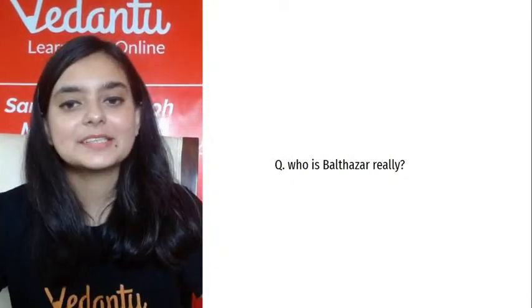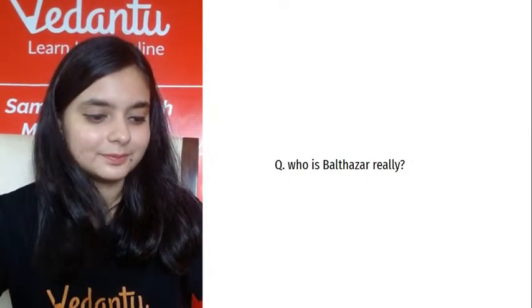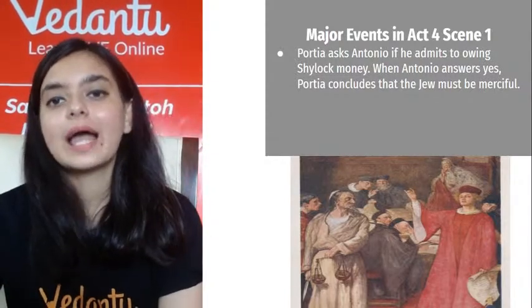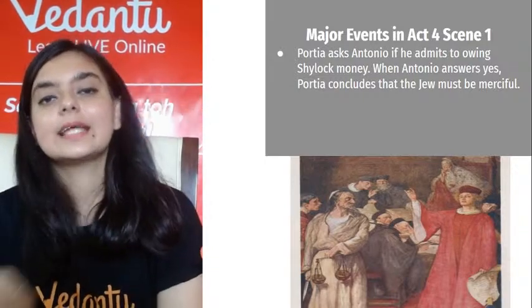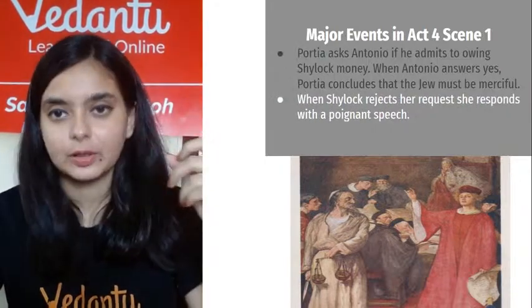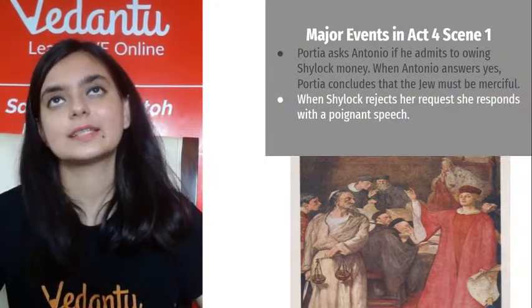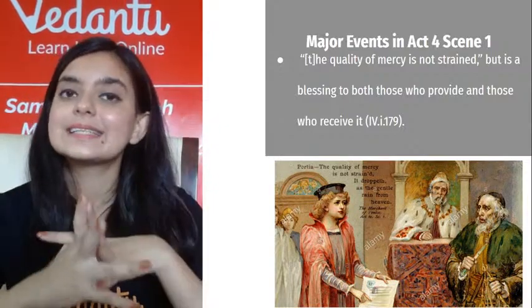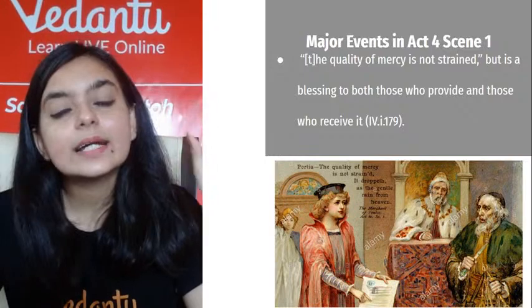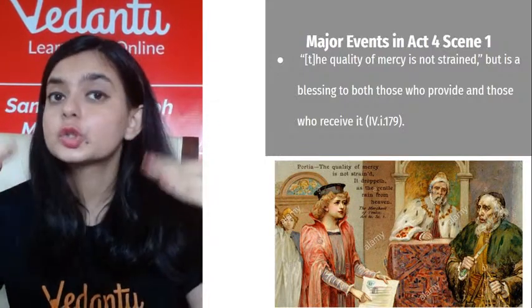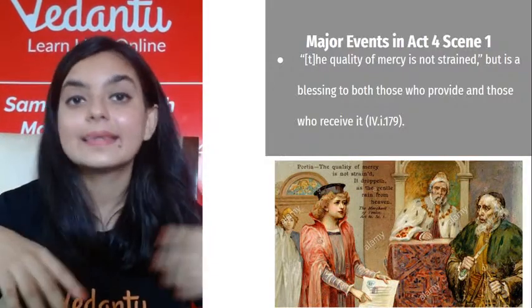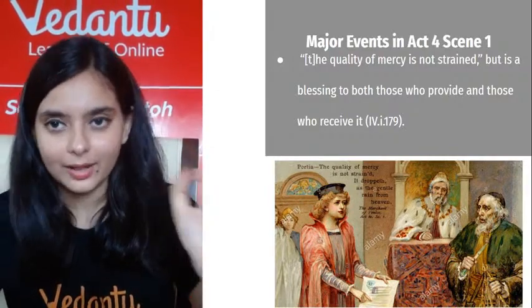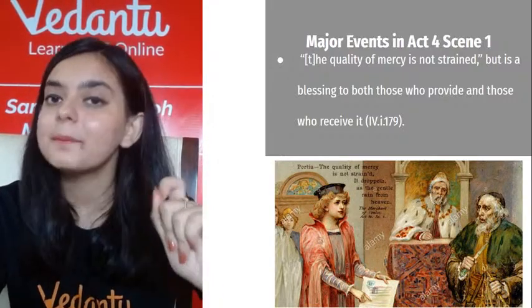Portia asks Antonio if he admits to owing Shylock money. When Antonio answers in the affirmative, Portia concludes that the Jew must be merciful. Shylock rejects all her requests. Shylock also argues that Christians keep slaves — they don't show mercy to slaves, so why should he show mercy? That was also an argument given by Shylock.